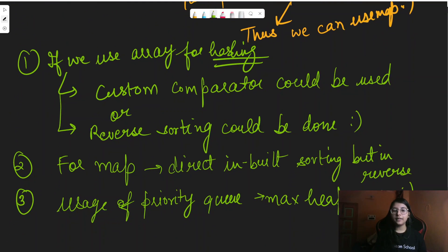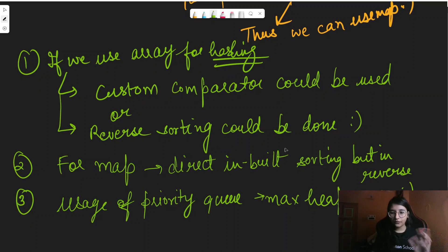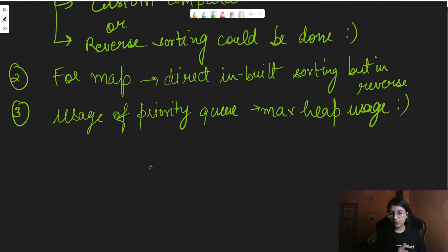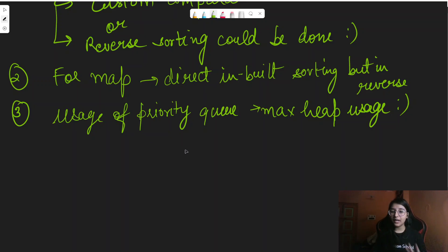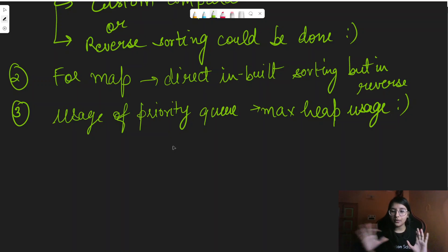There are three types of solutions. First, using arrays for hashing with a custom comparator. Second, using arrays with reverse sorting. Third, using a map directly with inbuilt reverse-order sorting. We can also use a priority queue — specifically a max-heap — which sorts in decreasing order automatically and gives us our answer.